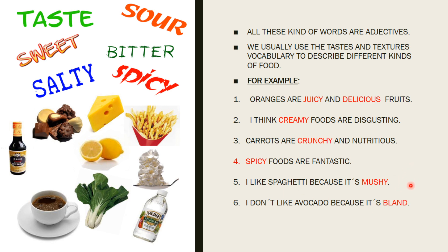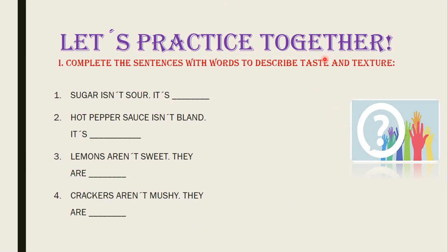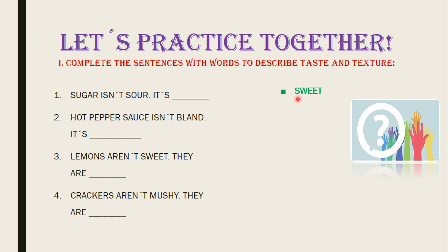Very good, guys. Let's continue with the next part. Let's practice together. Complete the sentences with words to describe tastes and textures. For example, number one: Sugar isn't sour. It is... Do you remember? What is the correct option? Sweet. That's right. This is the correct answer for number one.